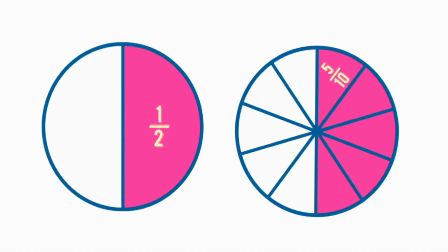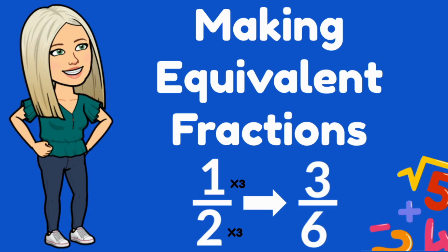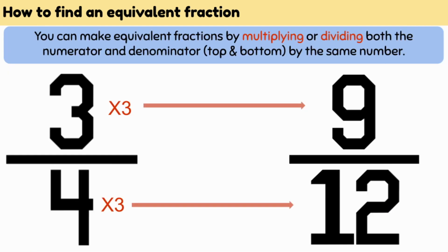Equivalent fractions are fractions that have equal value even though they are divided into a different number of parts. To make an equivalent fraction, you need to multiply or divide both the numerator and the denominator by the same number.